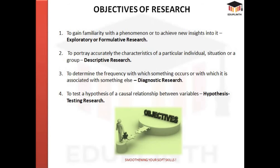Now, why do we do research? There are four objectives. Number one: to gain familiarity with phenomena or to achieve new insights — this is called exploratory or formulative research. Number two: to portray accurately the characteristics of a particular individual, situation, or group — this is called descriptive research. Number three: to determine the frequency with which something occurs or is associated with something else — this is called diagnostic research. Number four: to test a hypothesis of a causal relationship between variables — this is called hypothesis testing research.